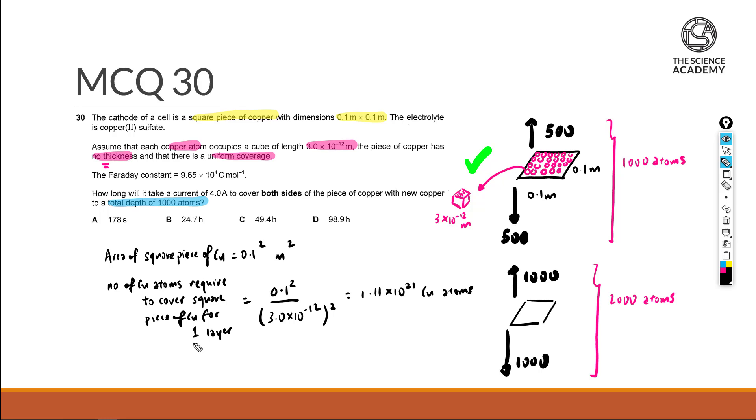And through this we'll end up by having 1.11×10^21 copper atoms just for us to form a single layer. But again we are now looking for a thousand layers. So the number of copper atoms for one thousand layers will then be equal to 1.11×10^21 multiply by one thousand. So this will end up with 1.11×10^24 copper atoms.